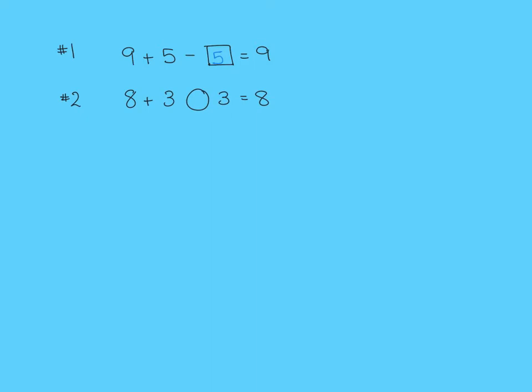For question two, instead of you filling in the number, you're going to fill in the operation. So 8 plus 3, and then we need to do something to the 3 to get back to 8. Now one of your hints is, if it's 3 both times, we're going to undo the opposite operation. So if we add 3, to get rid of that adding 3, we need to subtract 3. So our subtraction sign will go in the circle.